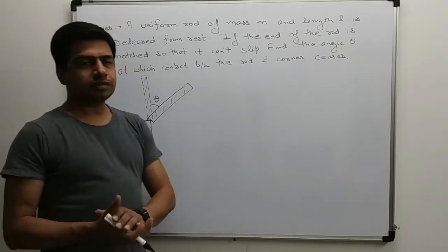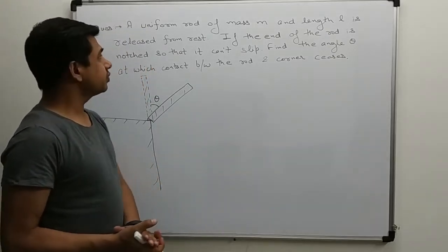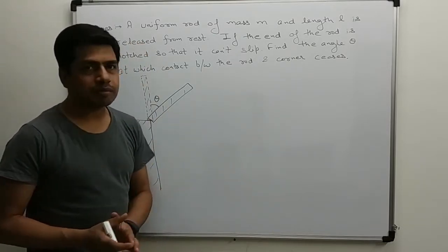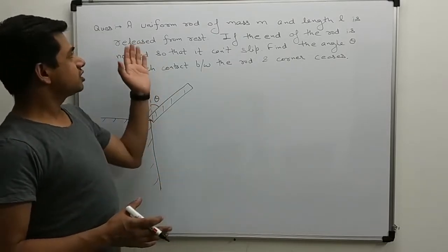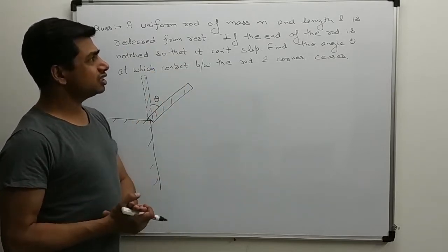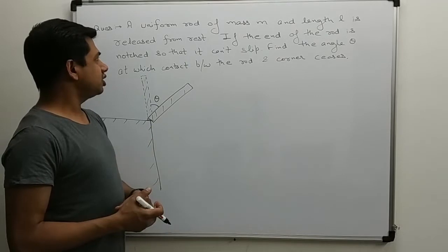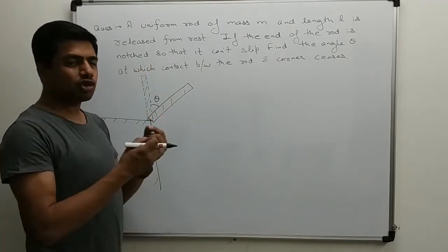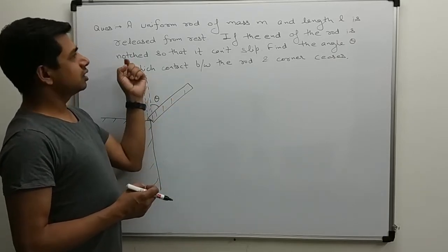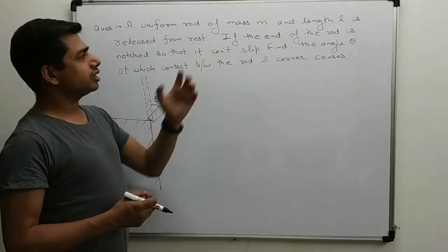Hello friends, I am going to discuss a question. A uniform rod of mass m and length l is released from rest. If the end of the rod is notched, notched means that it can't slip.